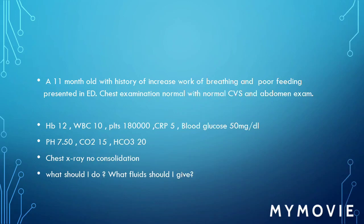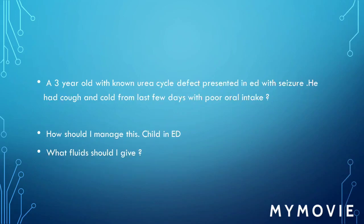Scenario three: a 3-year-old with a known urea cycle defect presented in ED with seizures. He had a cough and cold from the last few days with poor oral intake. How should I manage this child in ED and what fluids should I give?